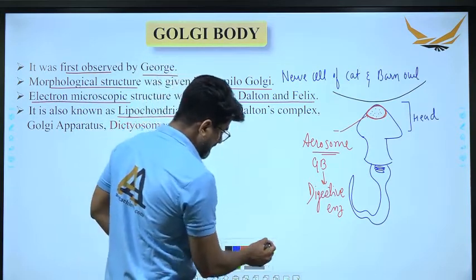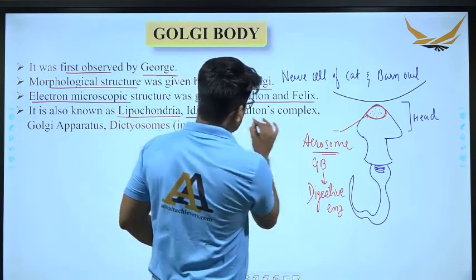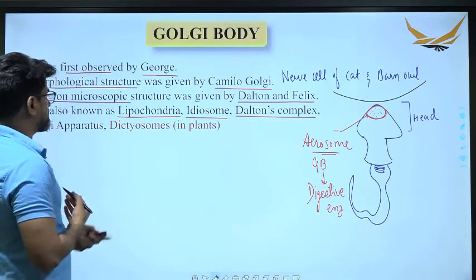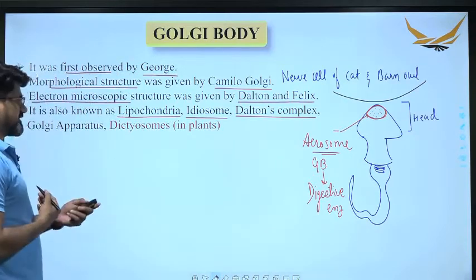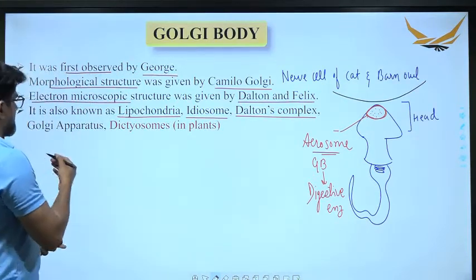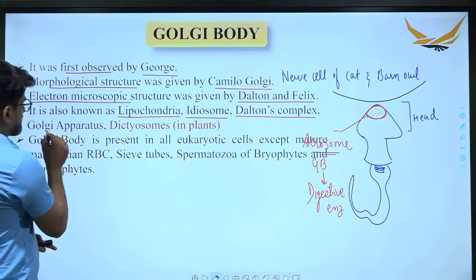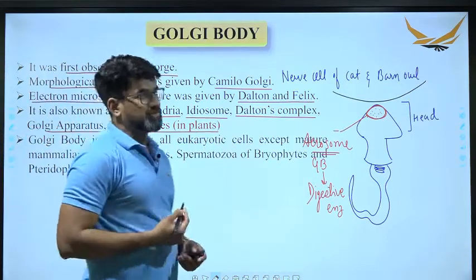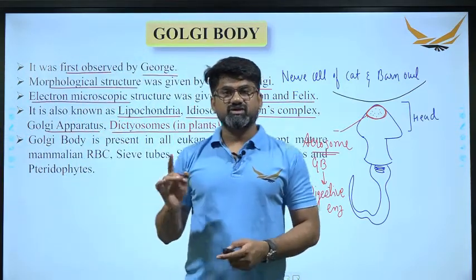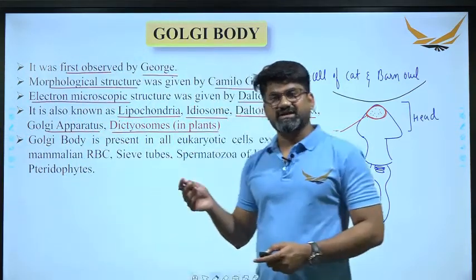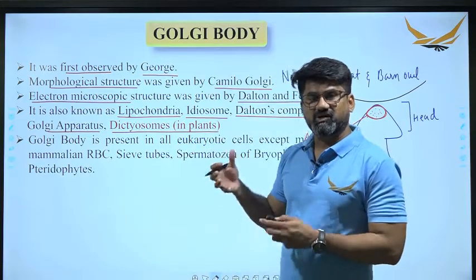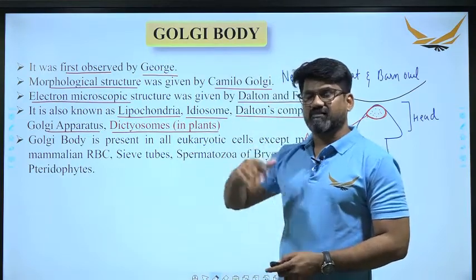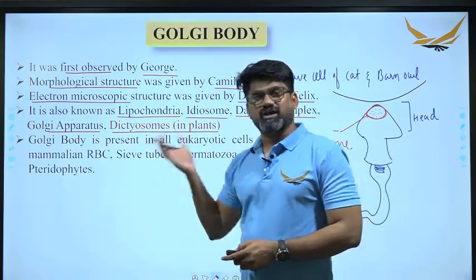Golgi body is also known as Dalton's complex, because its ultrastructure was described by Dalton and Phelix. It is also known as Golgi apparatus, and it is also known as dictyosome — a term particularly related to plant cells.